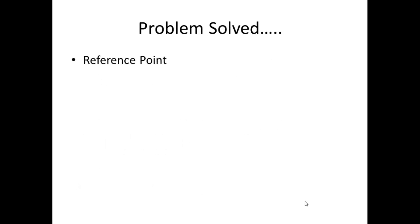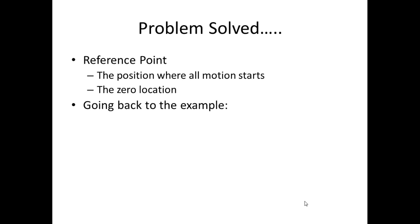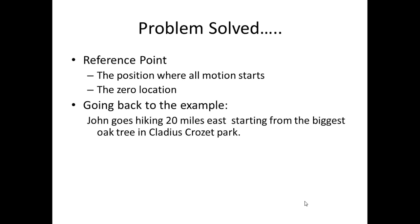So to solve that problem, we have a term called the reference point. And the reference point is the position where all motion starts. It's the zero location. So where displacement is zero, where distance is zero, where speed is zero. So if you go back to the example and you add a reference point, John goes hiking 20 miles east, starting from the biggest oak tree in Claudius Crozet Park.